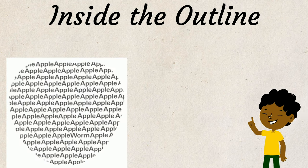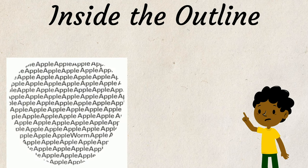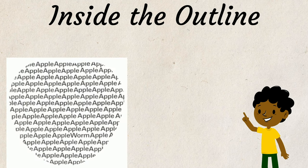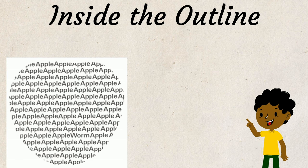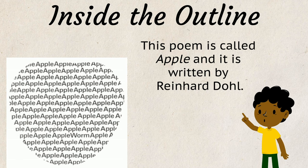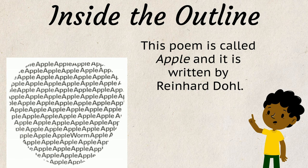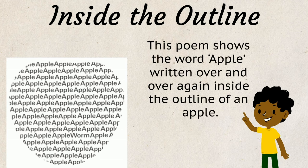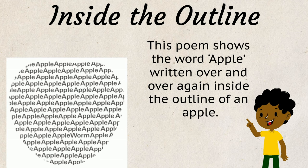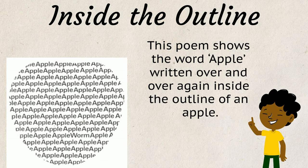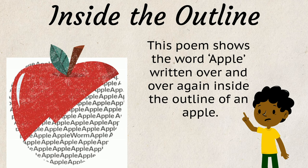Here is an example of a poem written inside the outline of a subject. This poem is called Apple, and it's written by Reinhardt Dole. This poem shows the word apple written over and over again inside the outline of an apple.